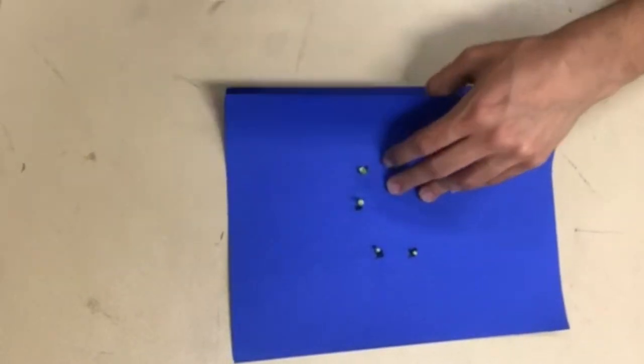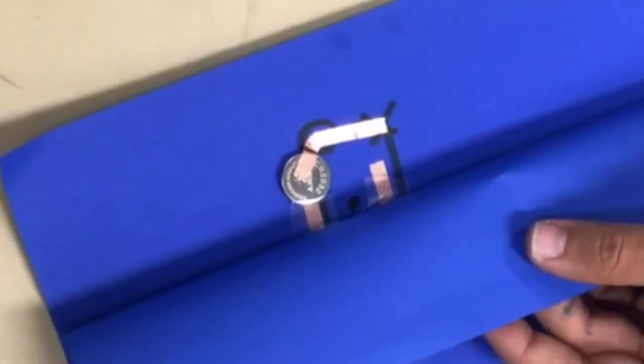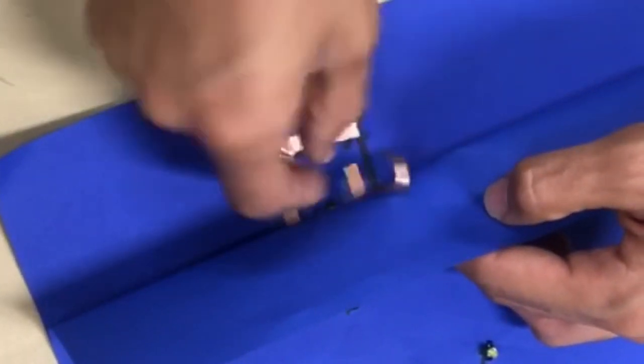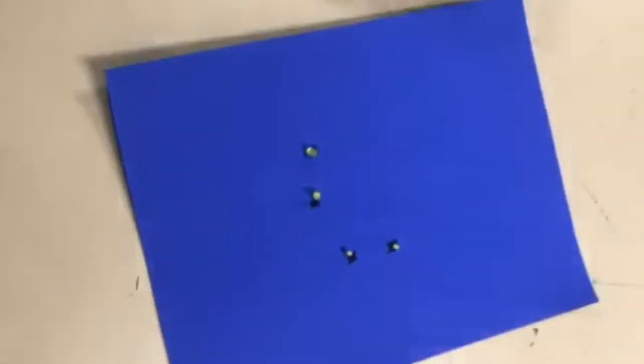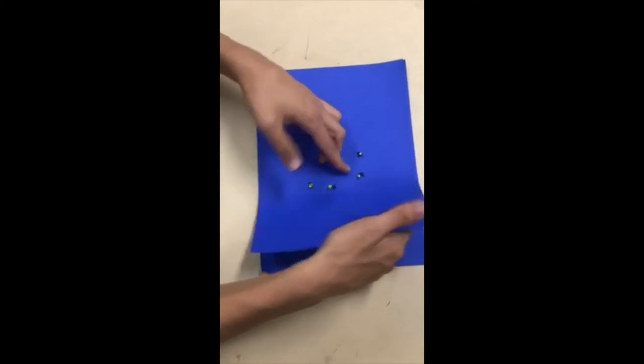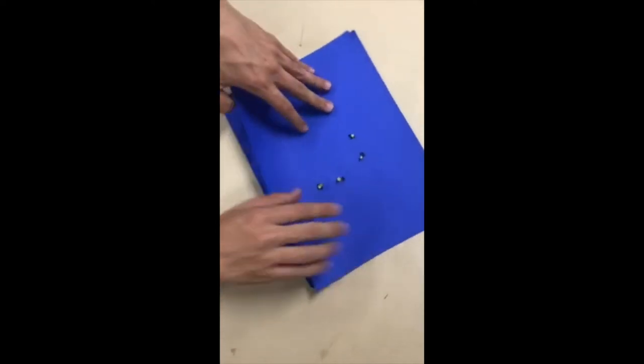So why doesn't it work without copper tape? It's because it's missing it. You gotta tape it to the back of the piece of paper, and then it'll work. You gotta test it to make sure it works, and if it doesn't work, then you add more tape.